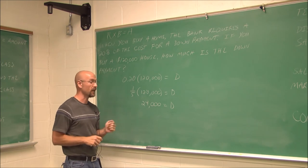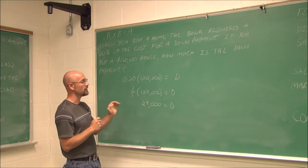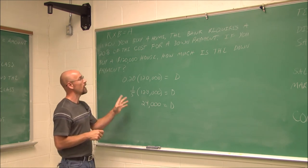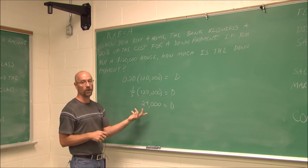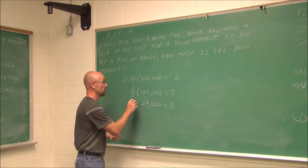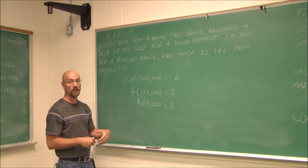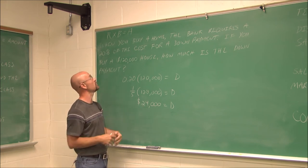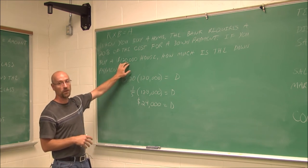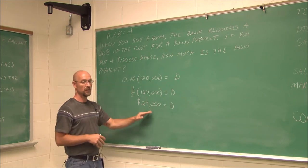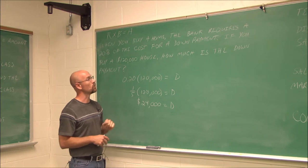Now, because it is an application problem, we have to read it again and say, does this answer the question? How much is the down payment? 24,000 what? Units are important here. So $24,000 would be the amount of money I would have to provide to the bank in order for them to loan me this much money to purchase this house. So that's a real world example.